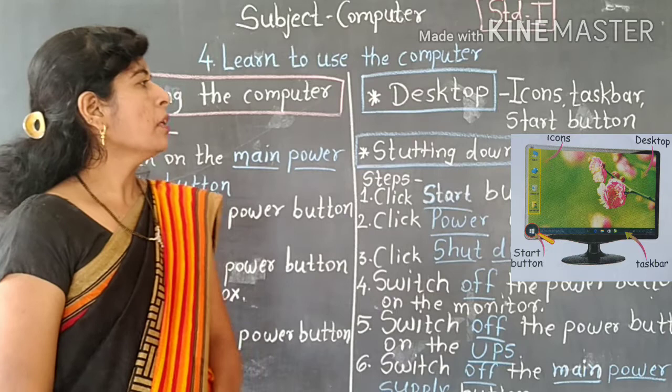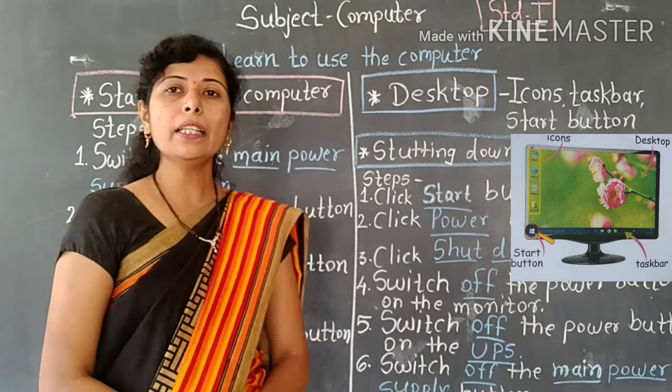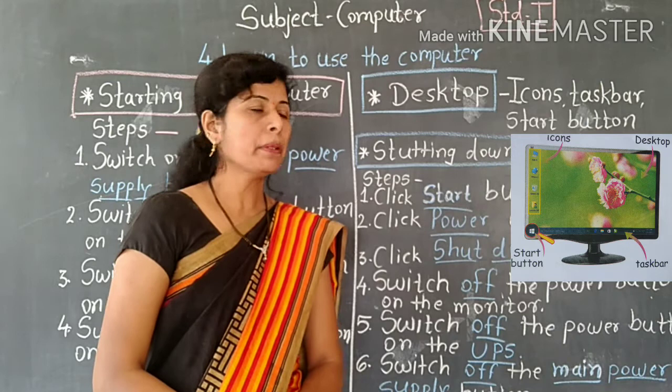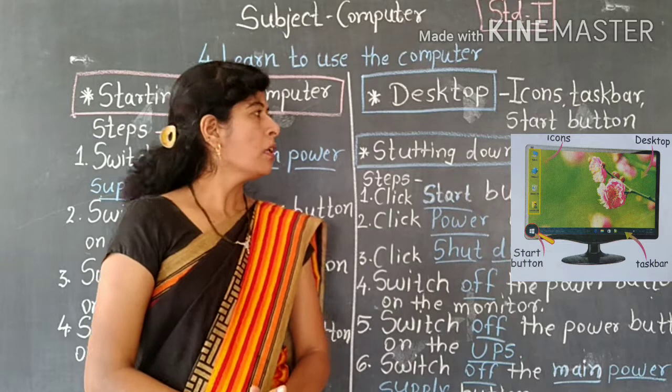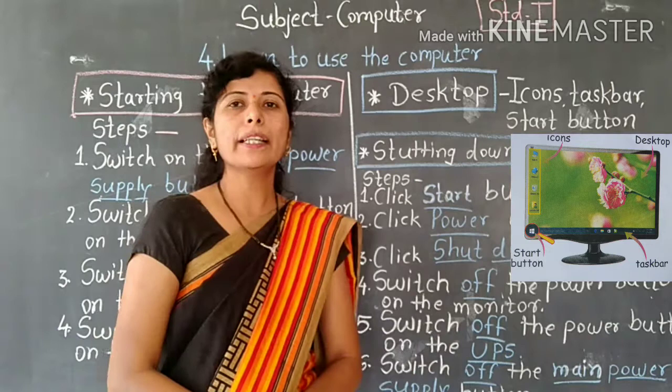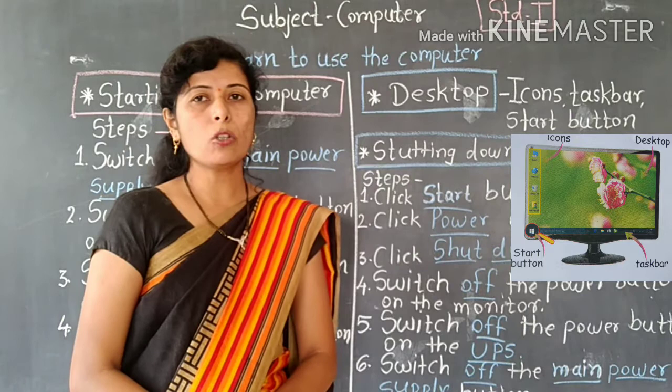The second desktop element is the taskbar. The thin bar at the bottom of the desktop is called the taskbar. There are some buttons on it. The first button is the start button. The start button is on the left side of the taskbar.